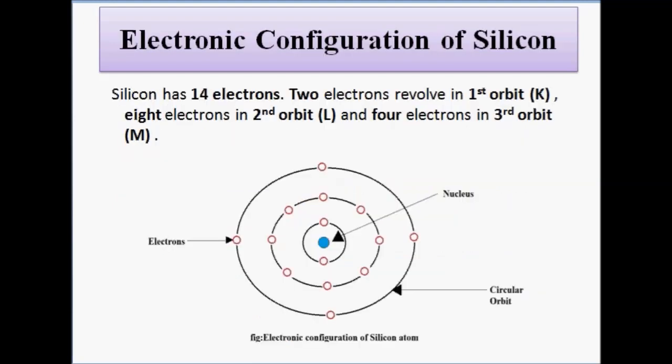Next, we will discuss the electronic configuration of silicon. Since we are studying semiconductor materials, we have chosen silicon as it is one of the most widely used semiconductor materials. Silicon has an atomic number of 14 — it has 14 electrons. The electronic configuration of silicon is 2, 8, 4: two electrons revolve in the first orbit, eight electrons in the second orbit, and four electrons in the third orbit.